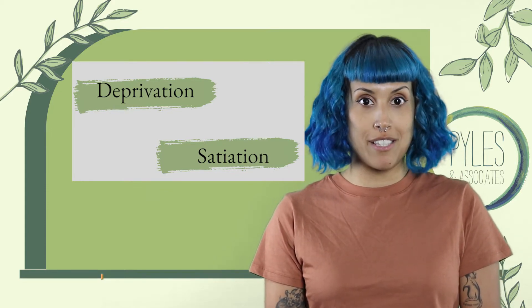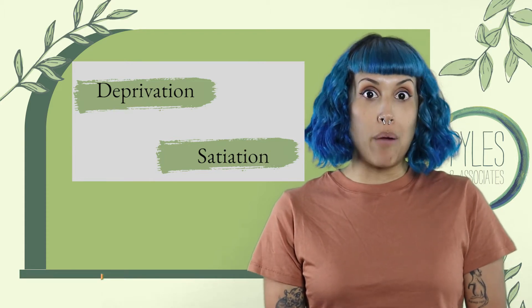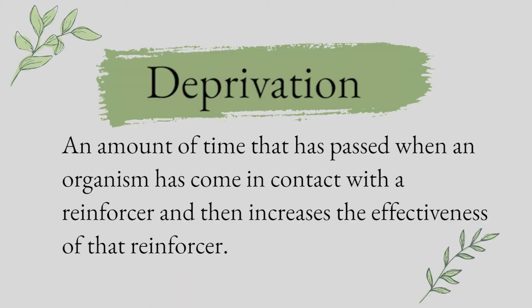Let's elaborate on how environmental variables can alter the effectiveness of a stimulus, object, or event. To do that we need to talk about deprivation and satiation. Deprivation is defined as the amount of time that has passed when an organism has come into contact with a reinforcer, and then increases the effectiveness of that reinforcer. For example, let's say you're at the park here in California and the high goes up to 90 degrees. That environmental variable increases the reinforcing effectiveness of water, so at that point we're more likely to find water in ways that have been reinforced in the past, and because of past learning history we'll continue to find water in those same conditions.